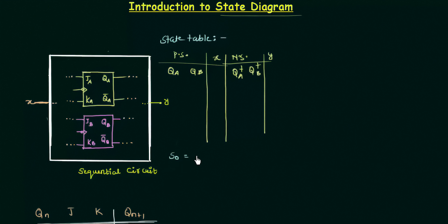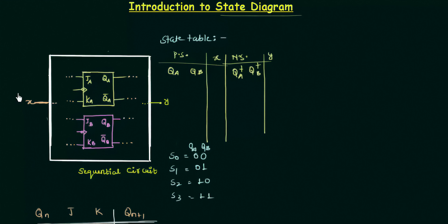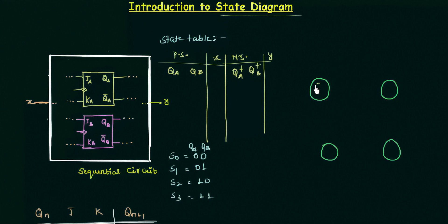The four states are written as S0, S1, S2, and S3. S0 is Qa=0, Qb=0; S1 is 0,1; S2 is 1,0; and S3 is 1,1. Each of these states from S0 to S3 is represented by a bubble. As there are four states, I have four bubbles: the first one represents S0 (Qa=0, Qb=0), second is S1 (0,1), S2 is 1,0, and S3 is 1,1. You can write the values 0,0 or simply write S0, S1, S2, and S3.